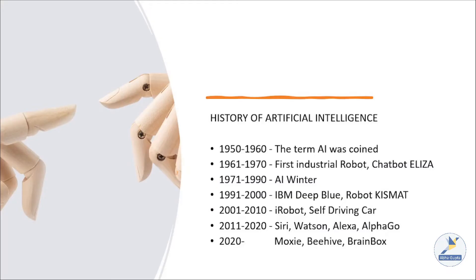Let us see a brief history of artificial intelligence. It is not a new term — work was being done on this long back. It started in the 1950s and 60s when the term AI was being coined, and as the internet gained importance and mobile phones came in, the trend continued with various applications being developed in the field of artificial intelligence.